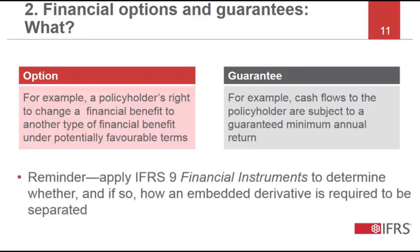As a reminder, an entity would need to determine whether the embedded financial options and guarantees should be separated and accounted for applying IFRS 9 Financial Instruments. If the embedded derivatives are not separated, an entity shall then account for those derivatives as part of the insurance contract applying IFRS 17.